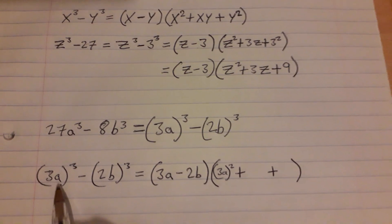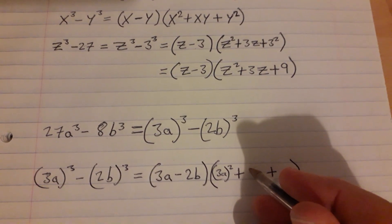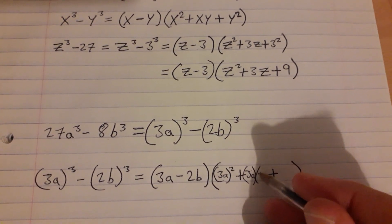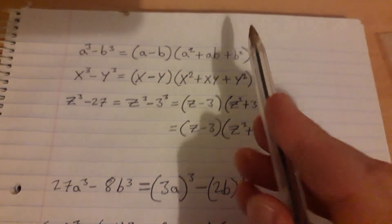So again the first part here is 3a, second part is 2b. Multiplied, 3a by 2b gives you, well let's tidy it up afterwards. Let's just write it as 3a times 2b for now.